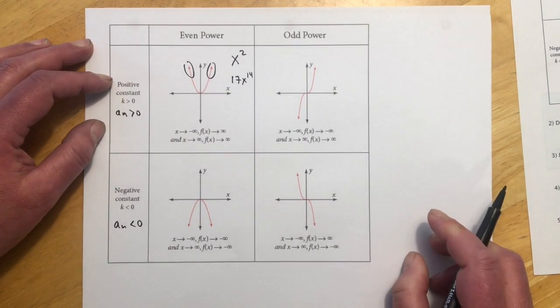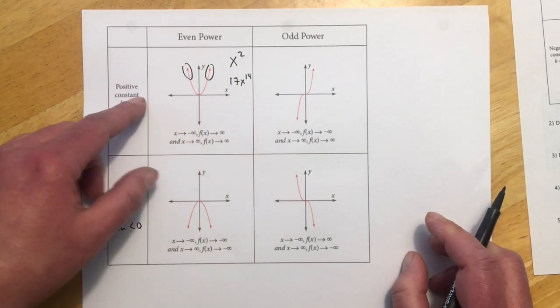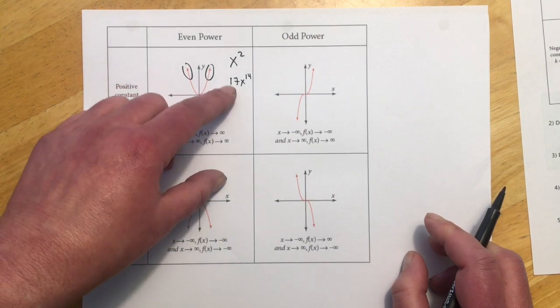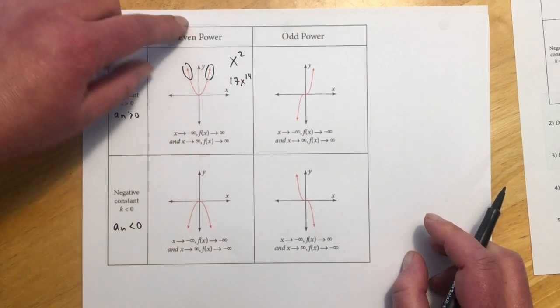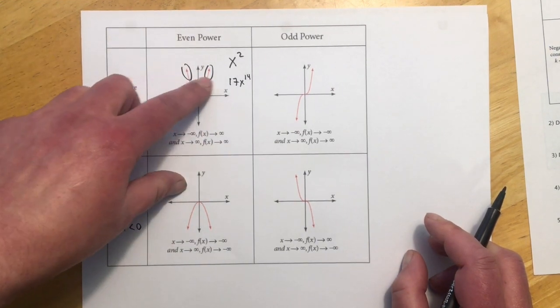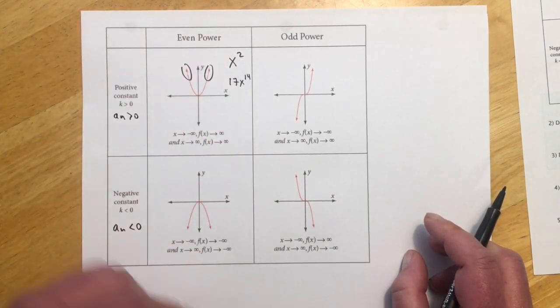It's going to be much steeper because it's a bigger power and has that coefficient of 17, but if you zoom out far enough, it's going to come in from the top, and it's going to leave out the top.